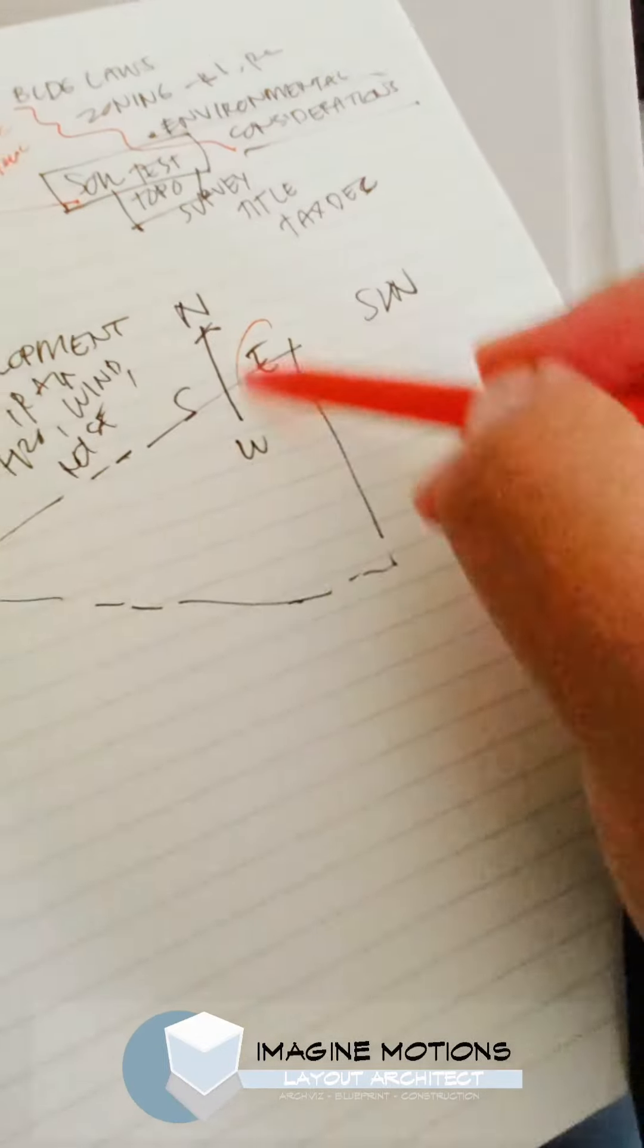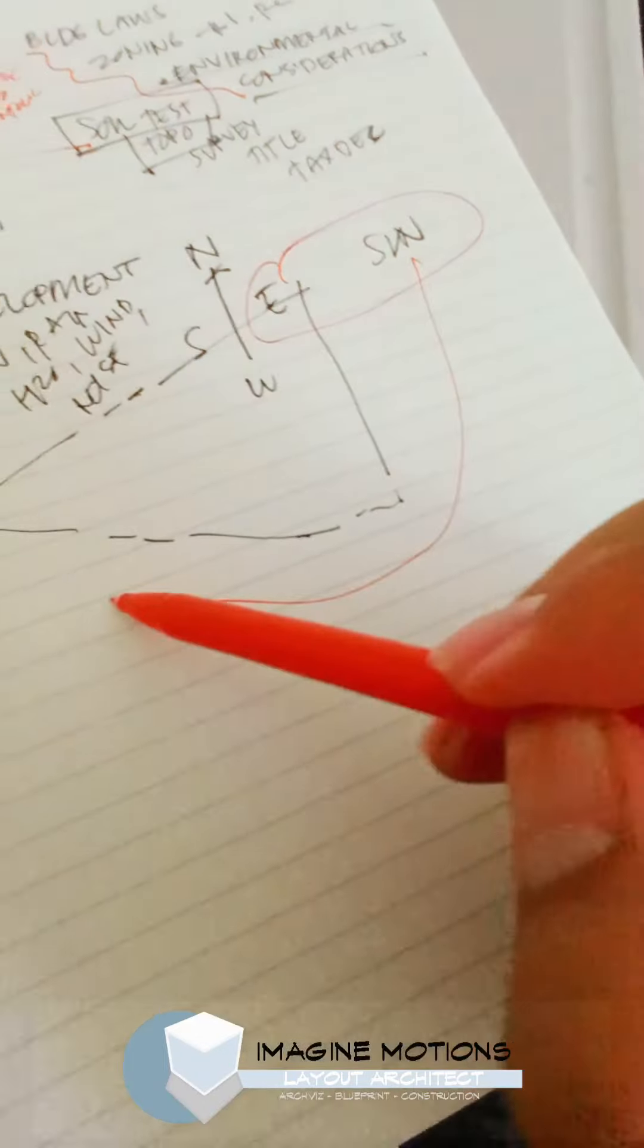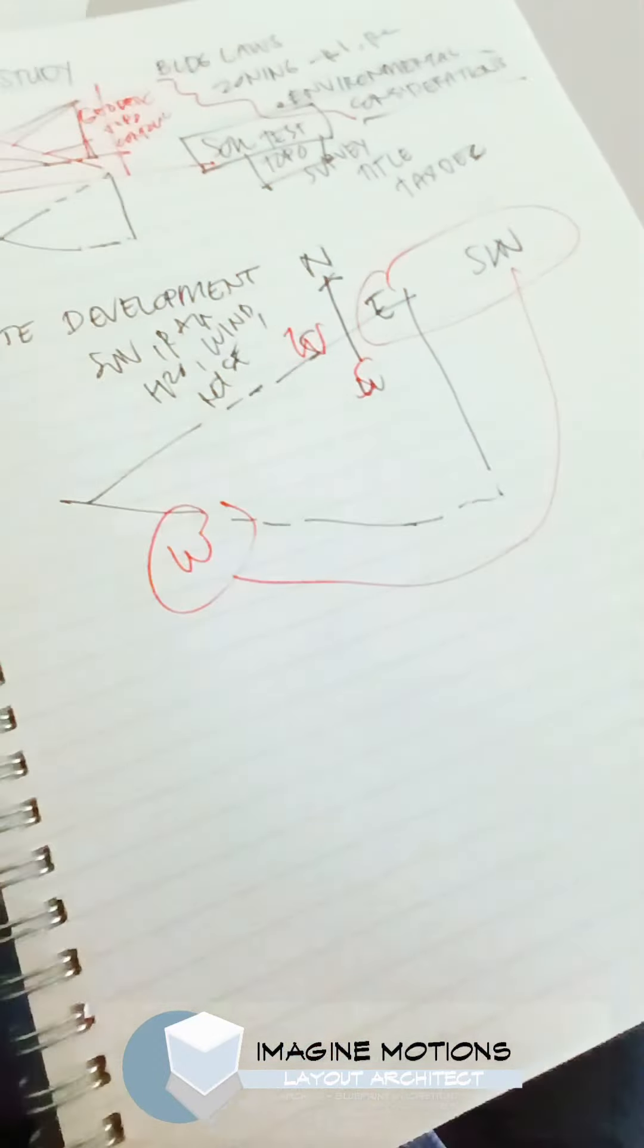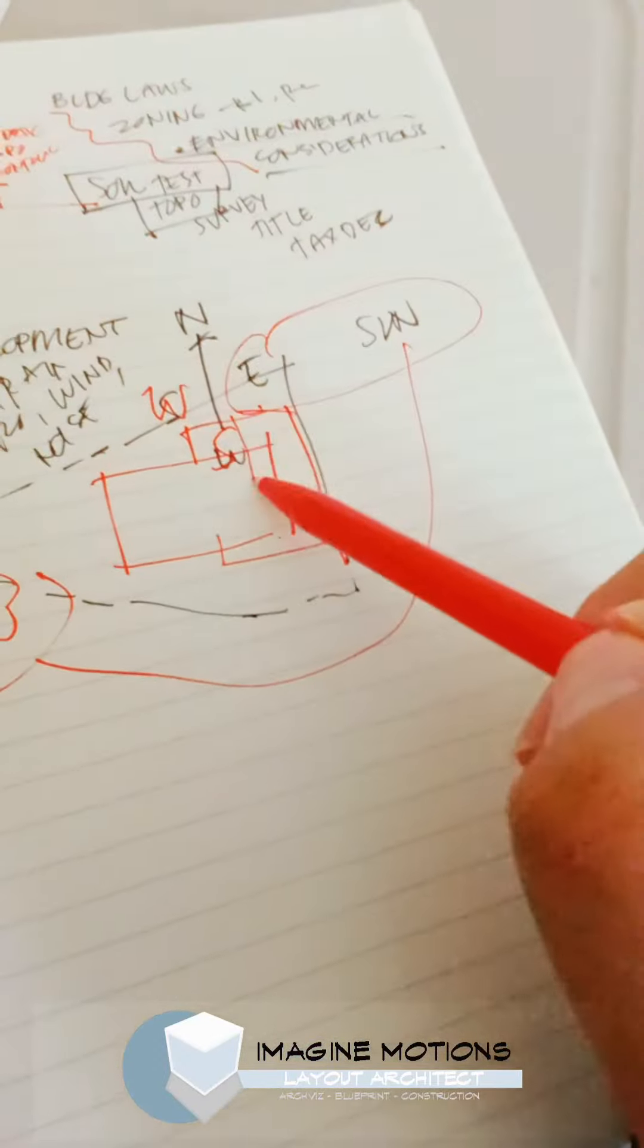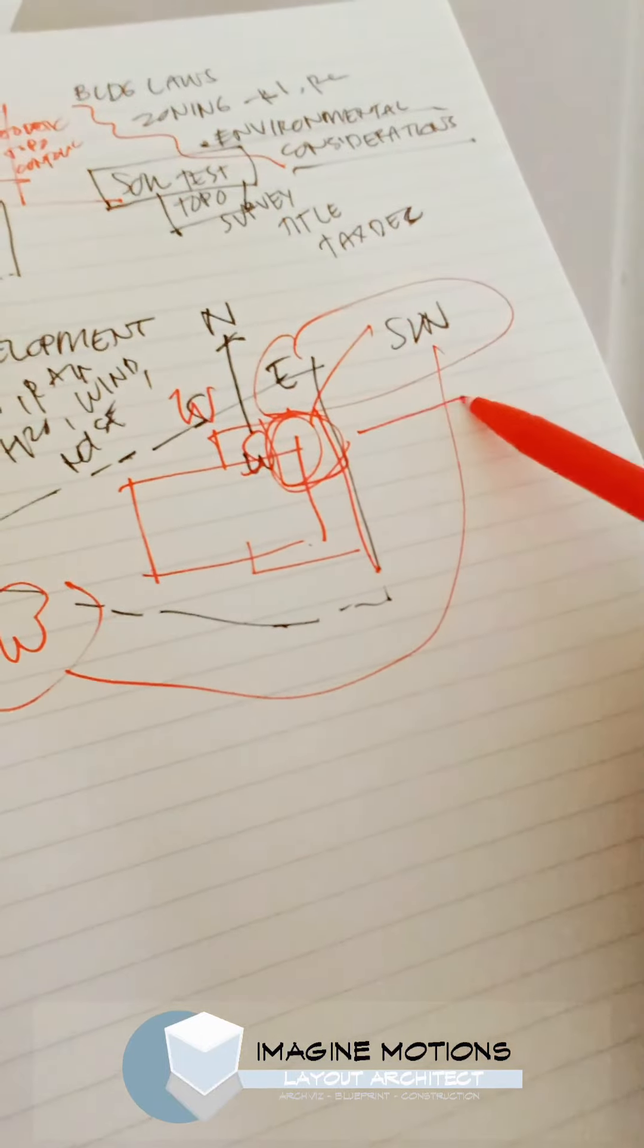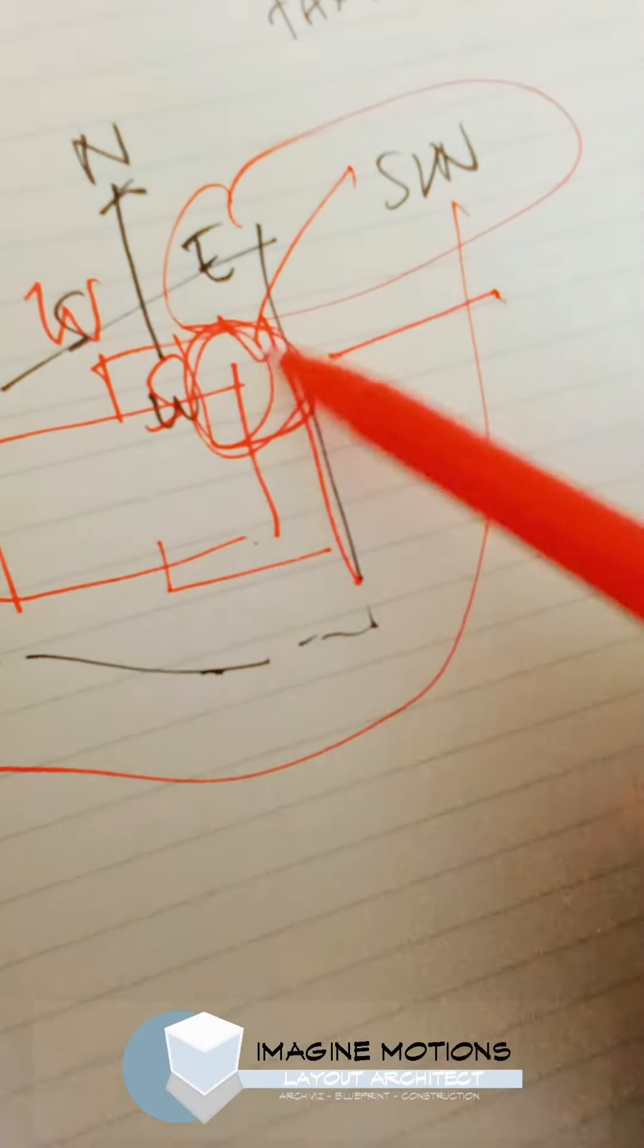Oriented north, sunrise comes to the east and sets on the west. So, which part of the building will maximize sunrise? Is it the kitchen during breakfast?